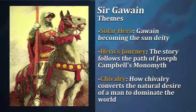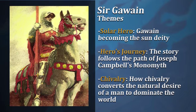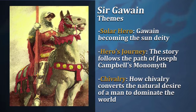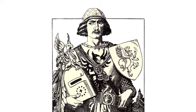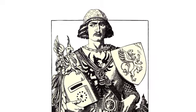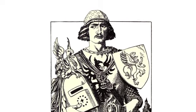So we're going to see in this poem the theme of the solar hero. We're also going to see the theme of the hero's journey as laid out by Joseph Campbell in the monomyth. And we'll see a third theme of chivalry — how chivalry converts the natural desire of a man to dominate the world, to escape death, and to use violence and strength to overcome things — setting chivalry up as a way of escaping the pitfalls of life while maintaining oneself so as to triumph over all the trials that life throws at you.